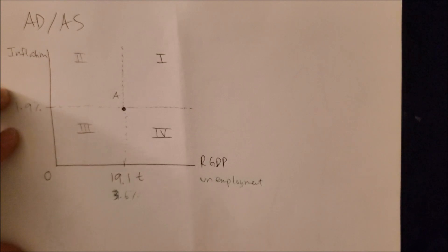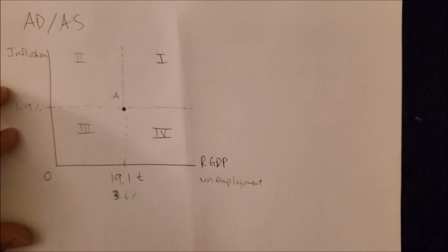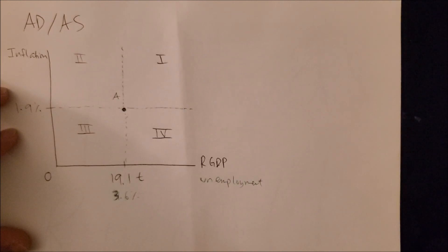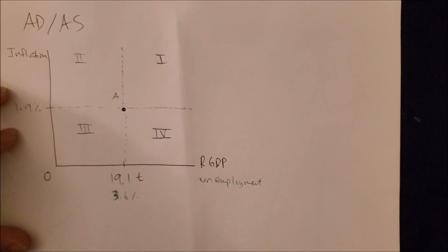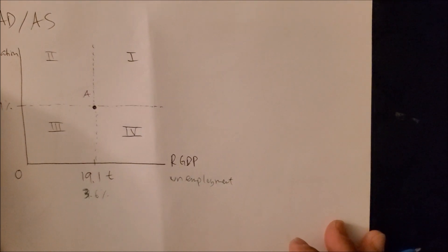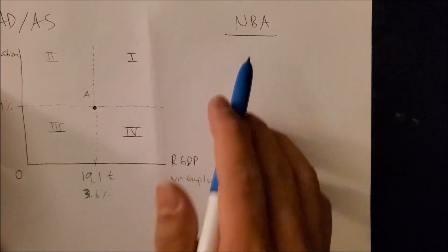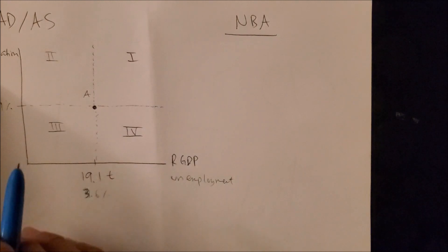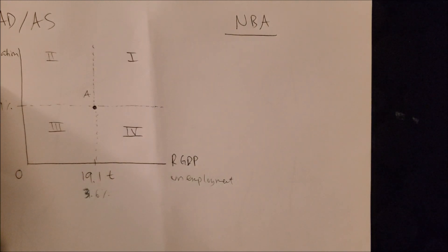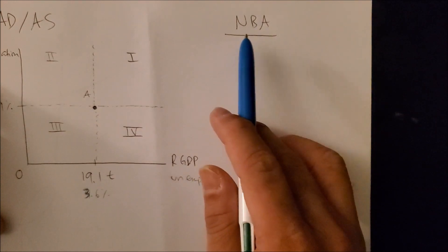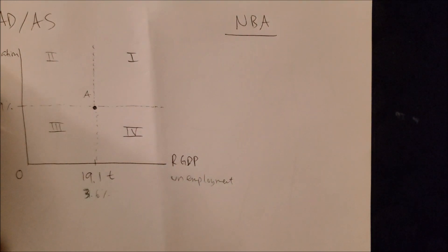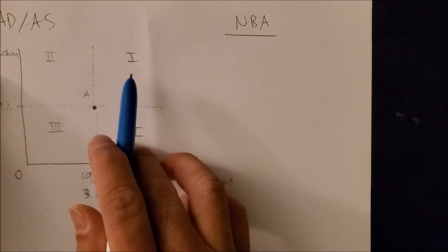The sports season has been off due to the global pandemic. I'm a big fan of the NBA, and not having games on TNT or NBA TV has been tough. For this lecture I'm going to use the NBA to illustrate how it's somewhat related to the AD-AS graph. The NBA, the National Basketball Association — let's focus on quadrant one.